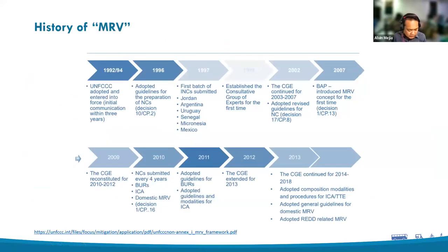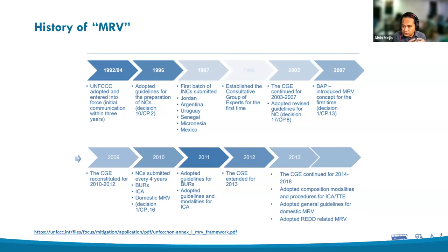When we talk about MRV, we need to look into the history of the term. It was first coined under the Bali Action Plan, released in 2007, which called for measurable, reportable, and verifiable mitigation commitments or actions. The plan emphasized the urgent need to enhance global efforts to mitigate greenhouse gas emissions. Measurement, reporting, and verification also underpins the importance of financial and technological support from developed countries towards developing countries — documenting efforts towards mitigation and how much emissions reductions would be achieved.